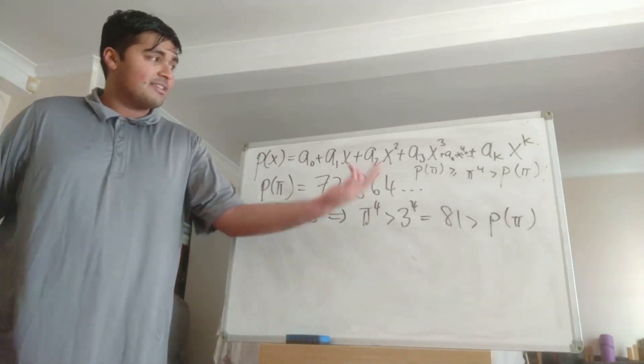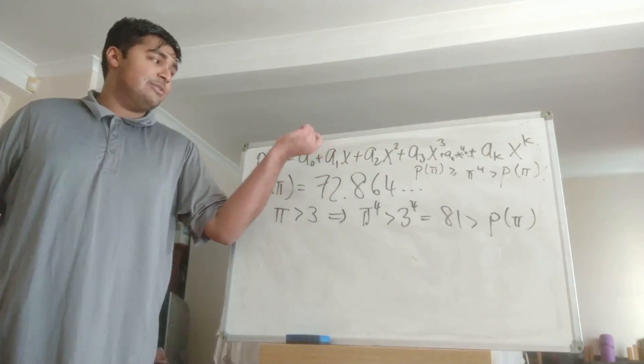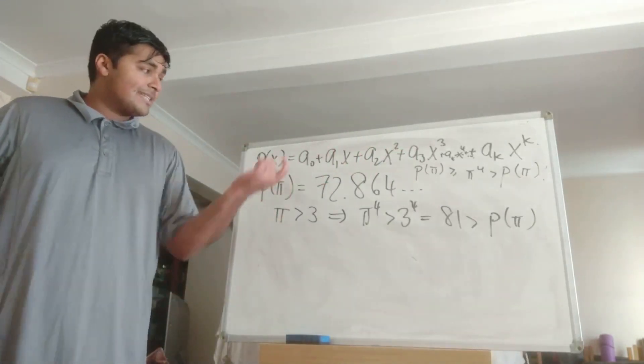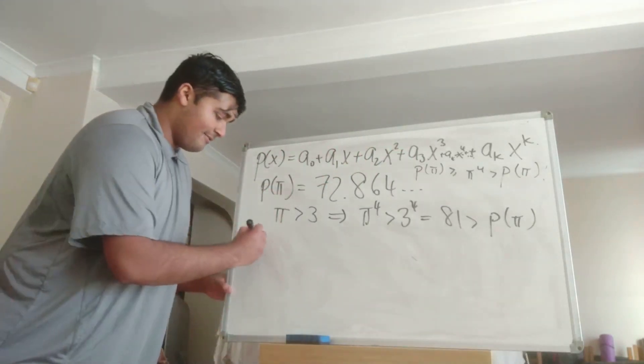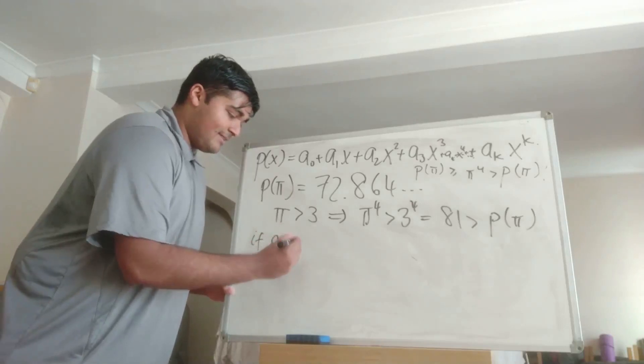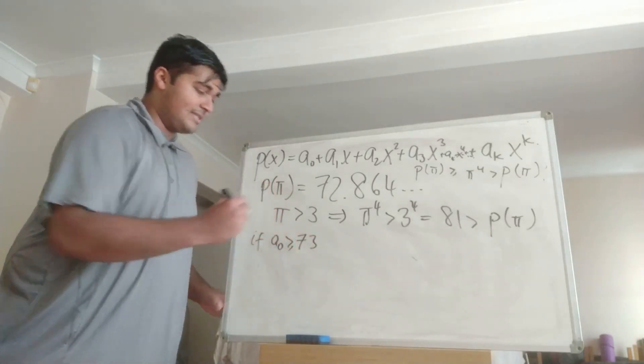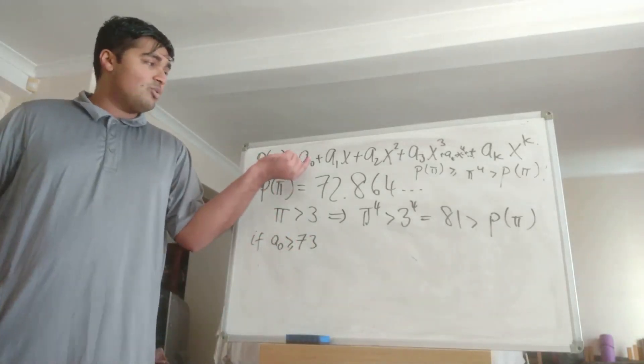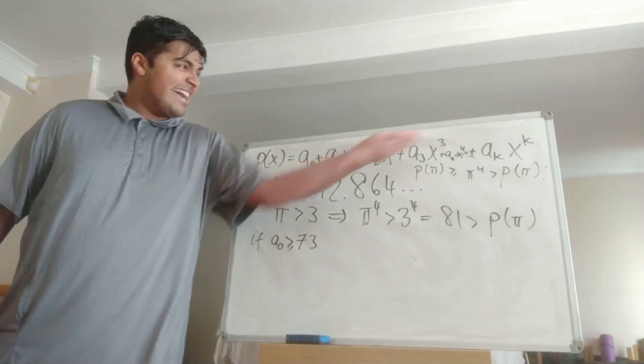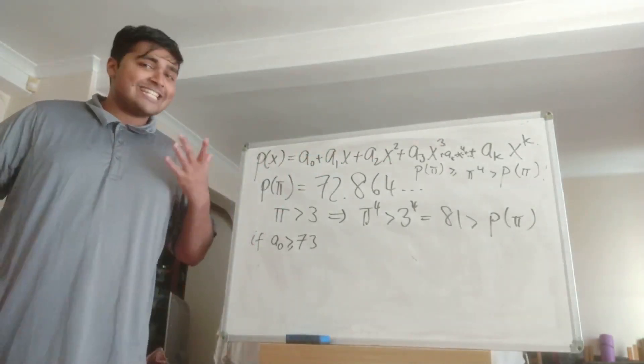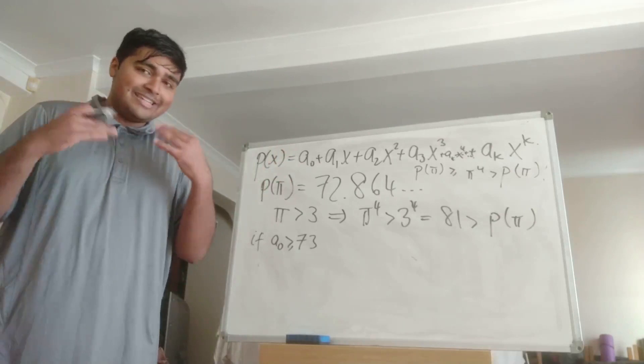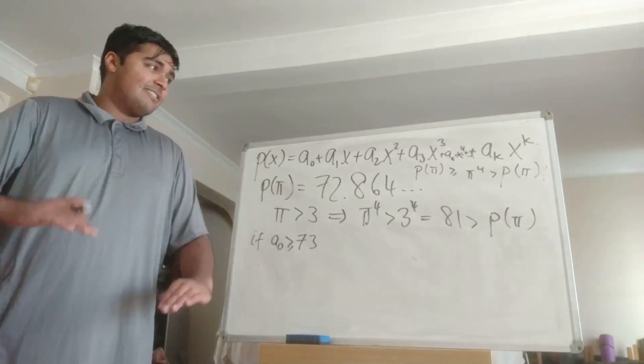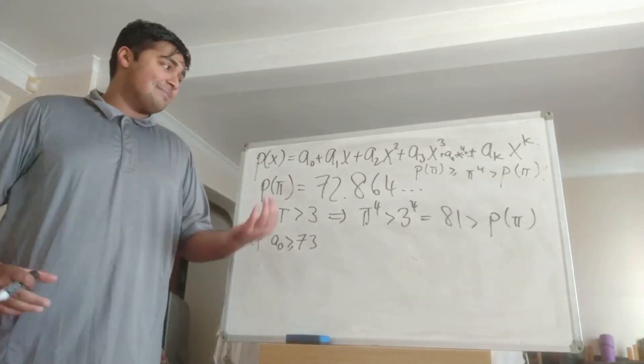But we can kind of repeat what we've just done here to bound a_3, a_2, a_1 and a_0 because clearly if a_0 was bigger than or equal to 73 then this term here would already be bigger than P(pi) and then adding on non-negative integers isn't going to make it negative again, it's not going to take anything away, it's just going to potentially add some stuff.